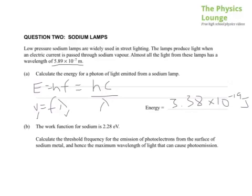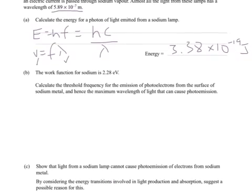Part B, the work function of sodium is 2.28 electron volts. Calculate the threshold frequency for the emission of photoelectrons from the surface of the sodium metal, and hence the maximum wavelength of light that can cause photoemission.